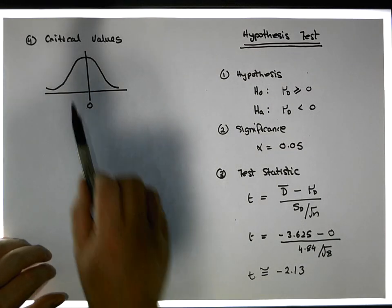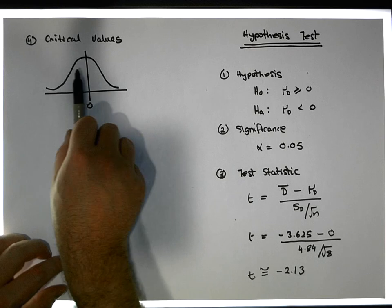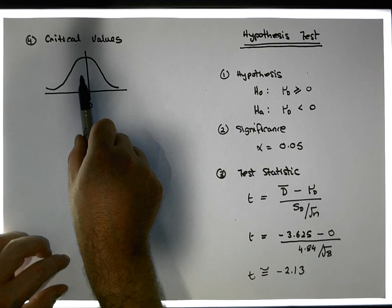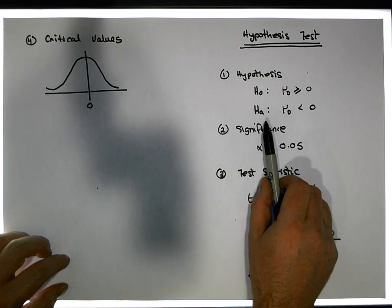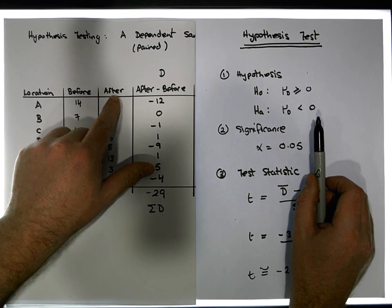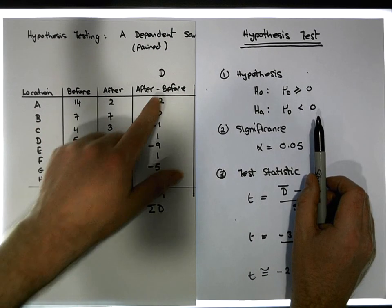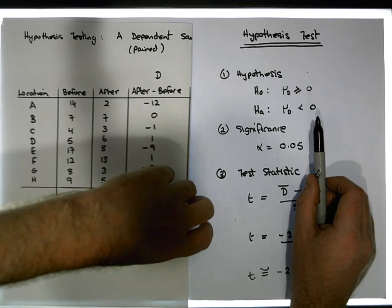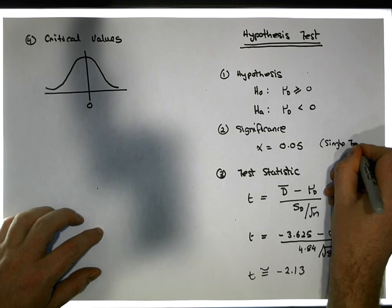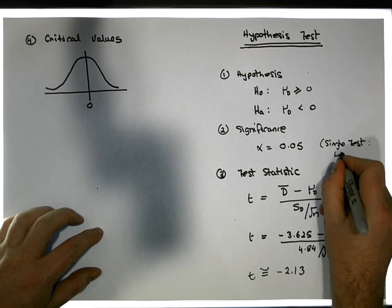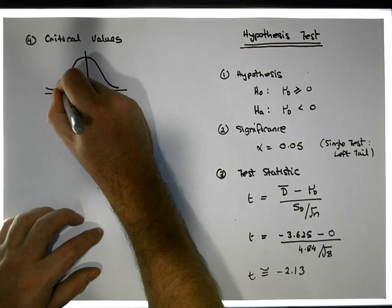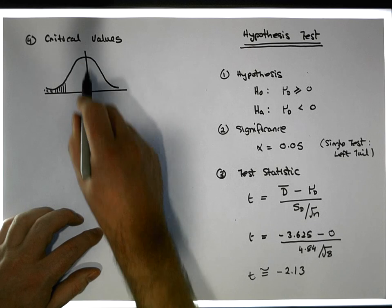If the test statistic is negative, that indicates a reduction. If positive, there's been an increase. We're only interested in the hypothesis of a reduction — that the intervention between the start and end of the month had a positive effect in reducing crime rates. This is a one-sided, left-tail test. We want to show the test statistic is sufficiently far from where it would be under the null position.